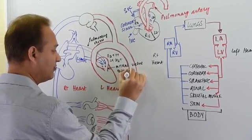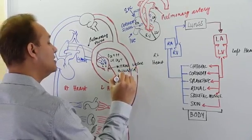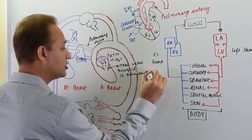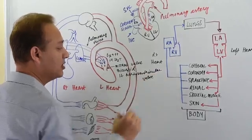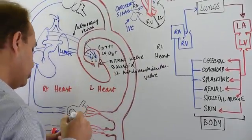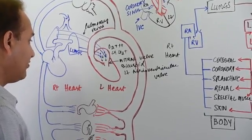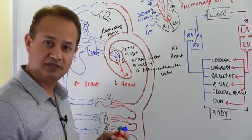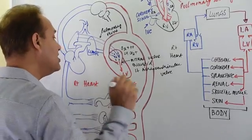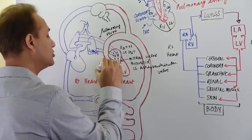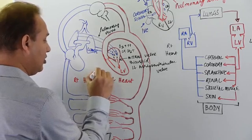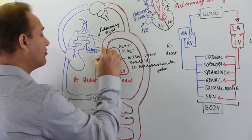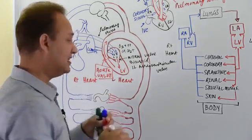From the left atrium, blood flows through the mitral valve — also called the bicuspid valve or the left atrioventricular valve (three names for the same valve) — into the left ventricle. The composition remains similar: more oxygen, less carbon dioxide. The oxygenated blood then passes through the aortic valve into the aorta.